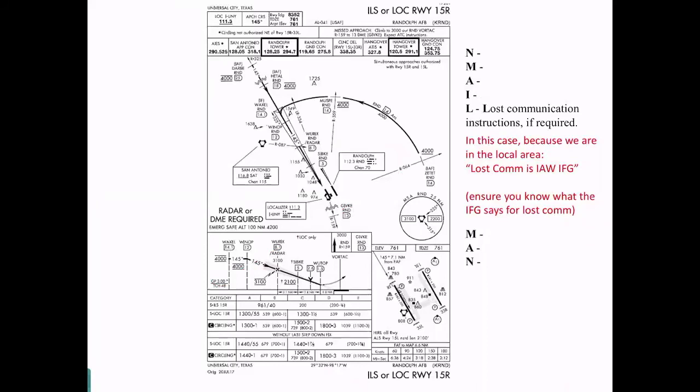L is Loss Comm. Make sure you review the Loss Comm. In this case, because we're in the local area, all you really need to brief is that, hey, Loss Comm is going to be in accordance with the in-flight guide. Of course, if you're going to brief that, you need to make sure that you know what the in-flight guide says to do for Loss Comm prior to the approach and on the approach.